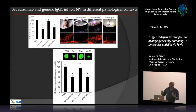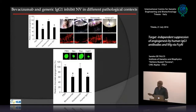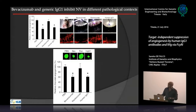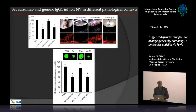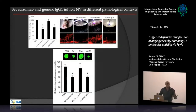We decided to evaluate if this was true in other angiogenesis mouse models, including neovascularization of the cornea, and started using generic human IgG1. Bevacizumab and generic human IgG1 were both able to inhibit angiogenesis, while ranibizumab was not. Another laboratory confirmed that in choroid neovascularization, bevacizumab works and ranibizumab does not, and that generic human IgG1 also inhibits angiogenesis.